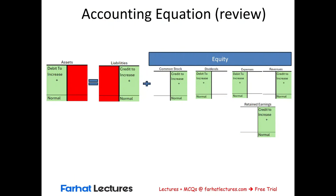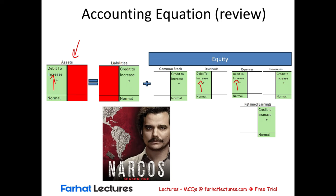Let's start by reviewing debits and credits for the account types. Assets increase on the debit side. Expenses increase on the debit side. Dividends increase on the debit side. Liabilities, common stock, and revenues increase on the credit side. Remember the DEA acronym — Dividends, Expenses, and Assets — these accounts increase on the debit side. That's one thing you need to be familiar with before we proceed.